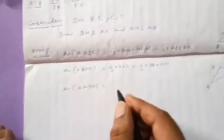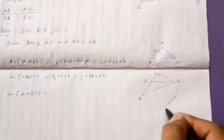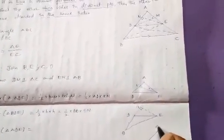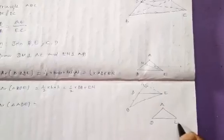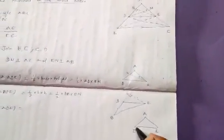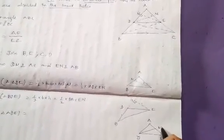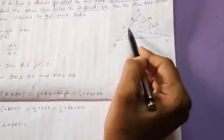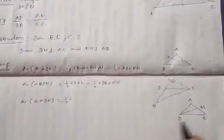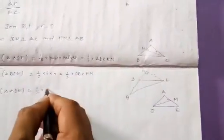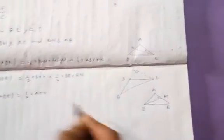For our convenience I am taking triangle ADE again. Previously EN perpendicular was considered. Now I am considering DM as the perpendicular. In this triangle ADE, considering DM as the perpendicular height, the area of triangle ADE = half × AE × DM, where AE is the base and DM is the height.